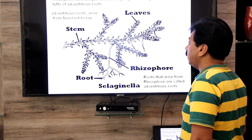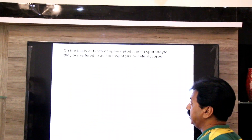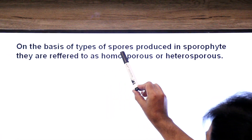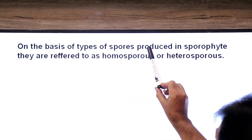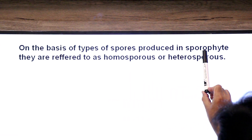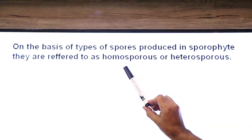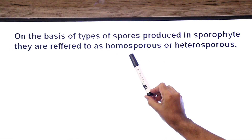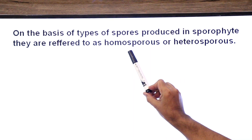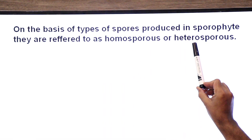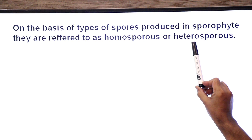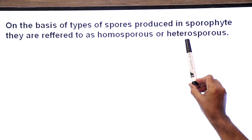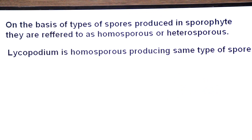On the basis of types of spores produced, sporophytes are referred to as homosporous — producing same types of spores — and heterosporous — producing two types of spores: microspores and megaspores.